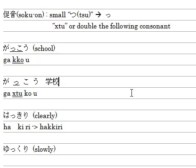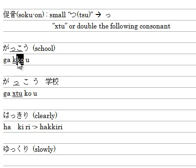You can also type by doubling the following consonant. That means が is G-A and こ is K-O. So the following consonant is K, so you double it: K-K, and う is U. I recommend this way because it's much easier.